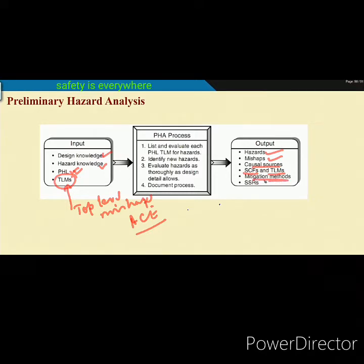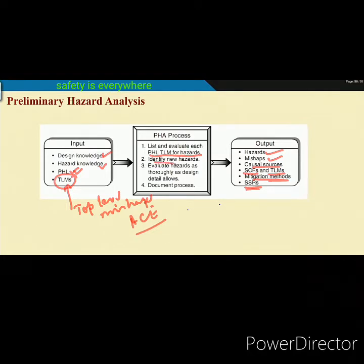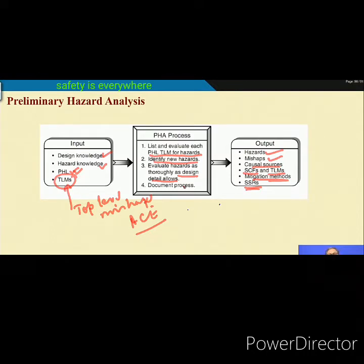The PHA process involves listing and evaluating each PHL top-level mishap for hazards. For example, if there are 50 preliminary hazards, every PHL entry will have some top-level mishaps. You list all of them, find any new hazards, evaluate hazards thoroughly as design details allow, and document the process. The PHL and PHA processes are intertwined and overlap — PHL helps you do PHA better.